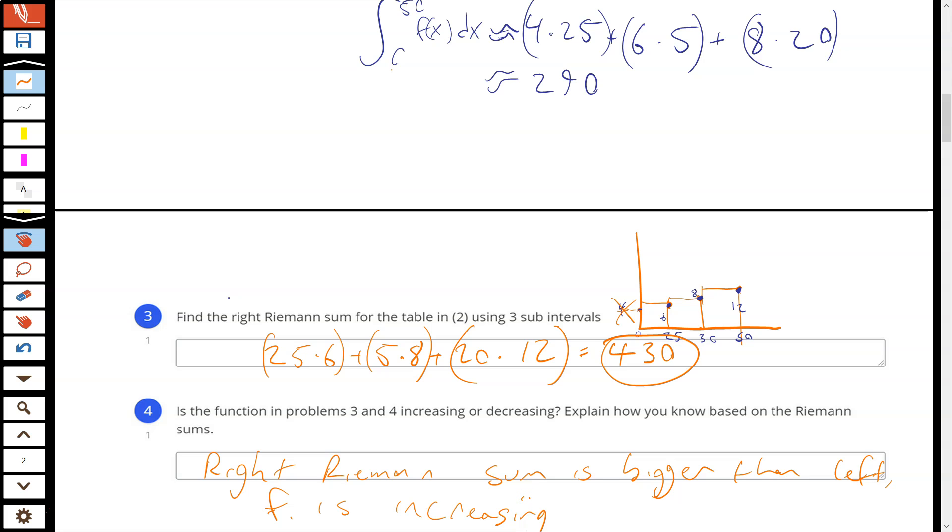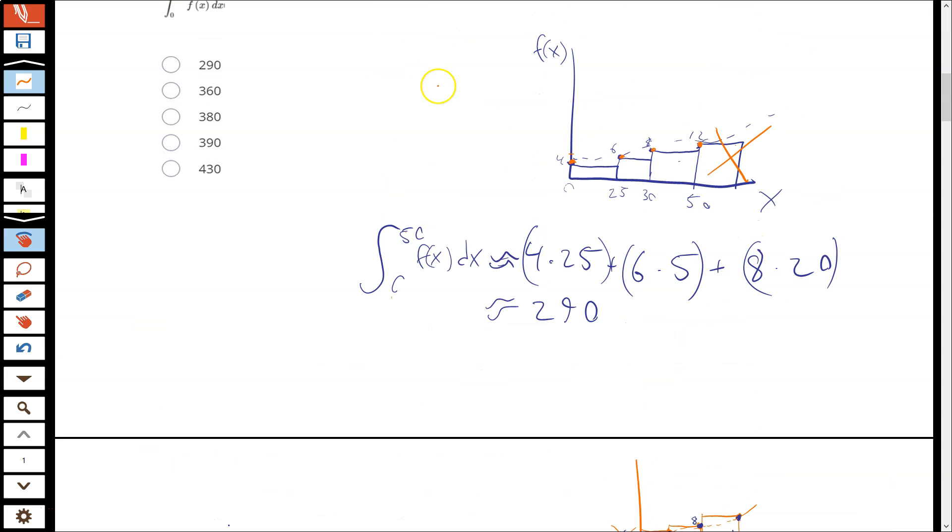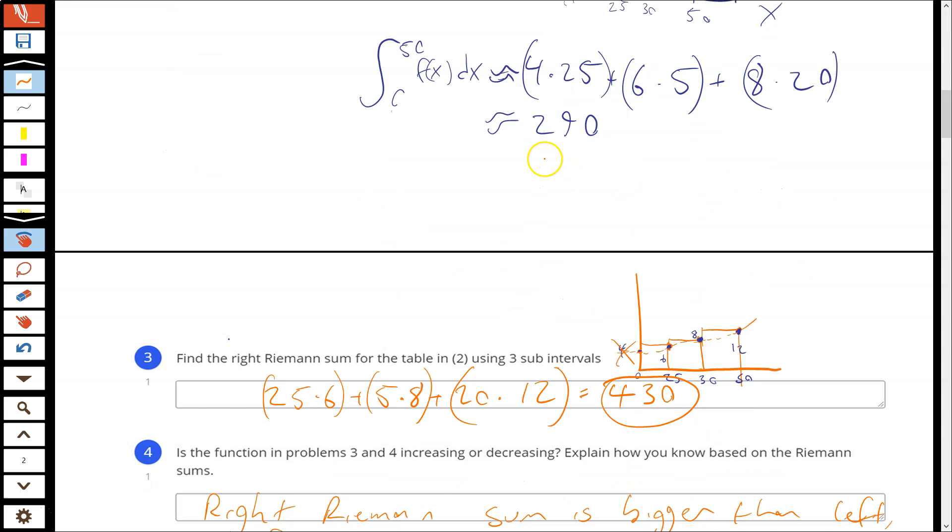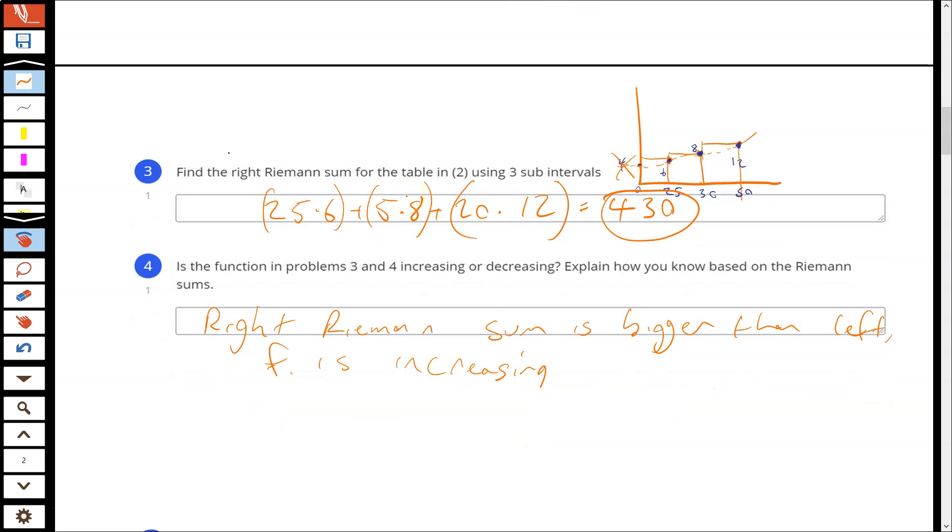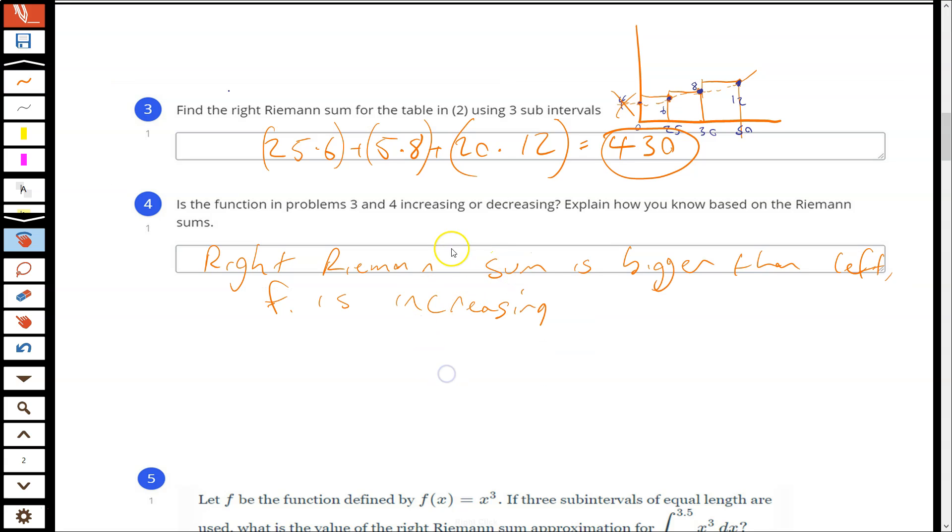Because the right Riemann sum is bigger than the left, f is increasing. That gets back to our idea of being an overestimate or underestimate. If the right Riemann sum is bigger than the left Riemann sum, that means that the right Riemann sum has to be an overestimate. The left Riemann sum has to be an underestimate. And that is only true when f is increasing. You can kind of see that based on the graph. If I sketched some curve for f in this case, notice this is an overestimate of f, and this would be an underestimate of f. But if your initial thought was, duh, it's increasing because it says so in the table, that's work smarter not harder kind of thing. But you should be able to figure out, if I gave you two Riemann sums, you should be able to figure out if the function is increasing or decreasing based on them.